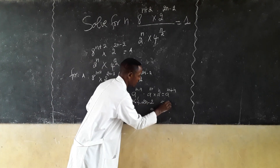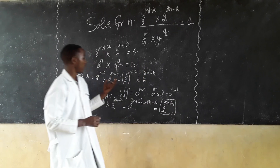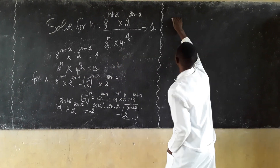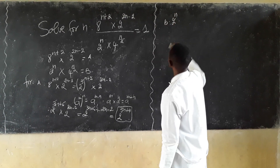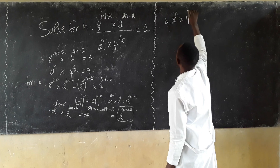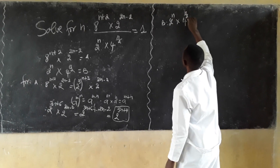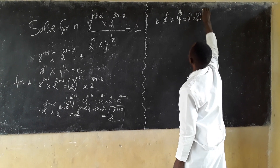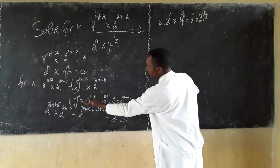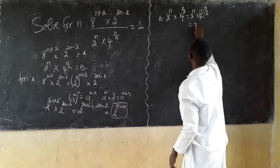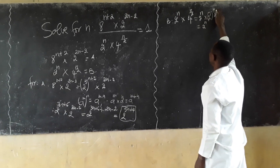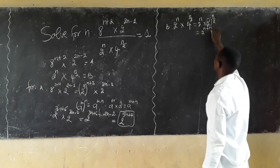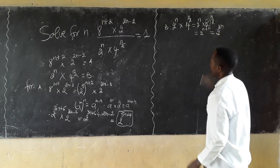For V, we have 2n times 4 power n over 2. This equals 2n times 2 power 2n over 2, which equals 2 power n plus 2n divided by 2, giving us 2 power 2n.